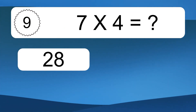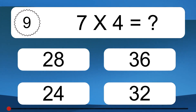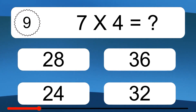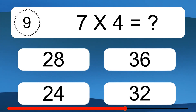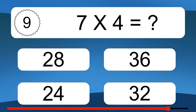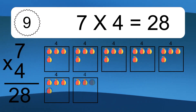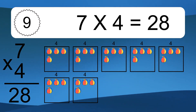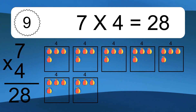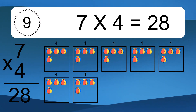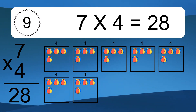7 times 4 equals what? 7 times 4 equals 28. We have 7 boxes, and each box has 4 colorful balls inside. If you count all the balls in all the boxes together, you will have 7 times 4 balls.